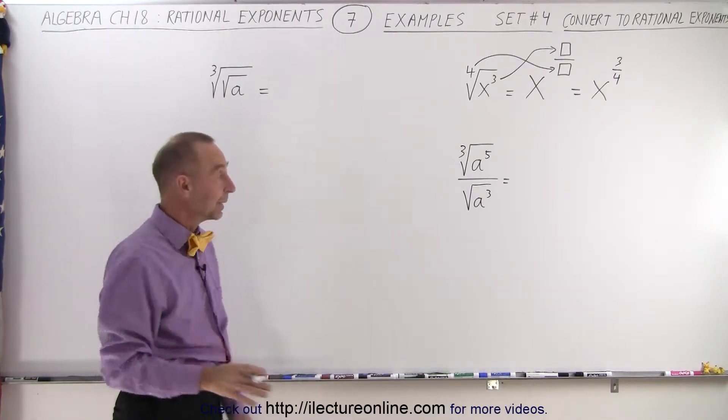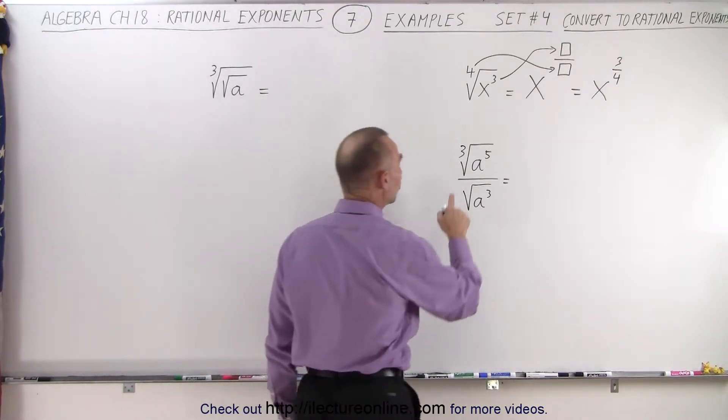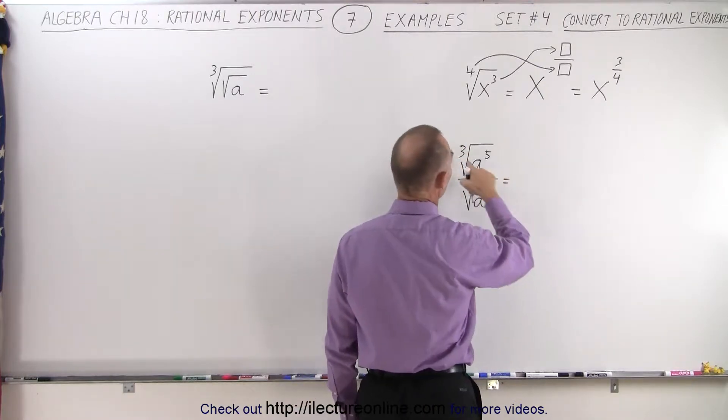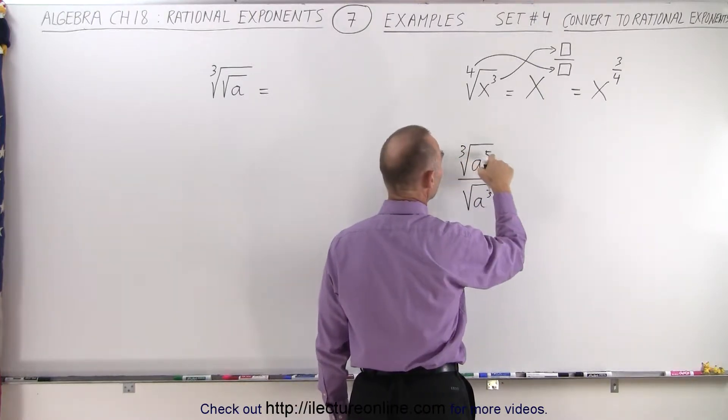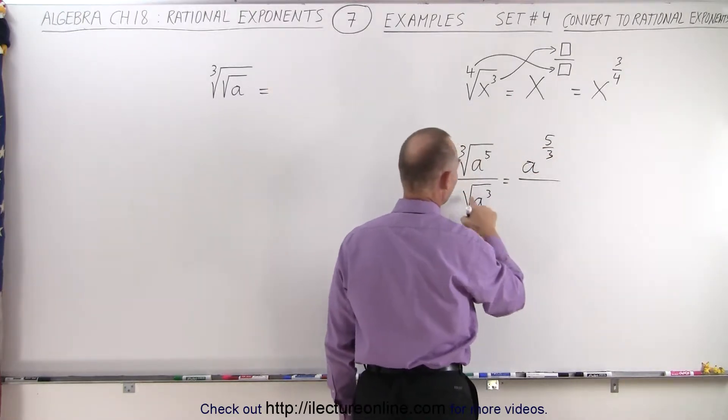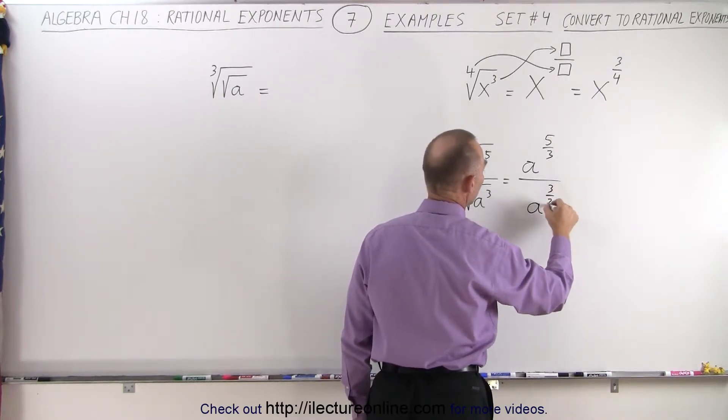I think we can get a little bit more complicated like our next example. So what we're going to do first is change the numerator and the denominator independently. So the numerator becomes, that's the root, that goes into the denominator, that's the power. So we have a to the 5 over 3 power divided by, that's the root, that's the power, a to the 3 over 2 power.